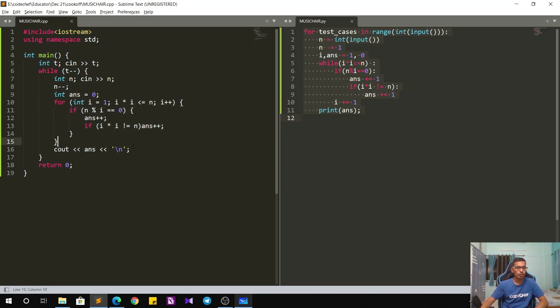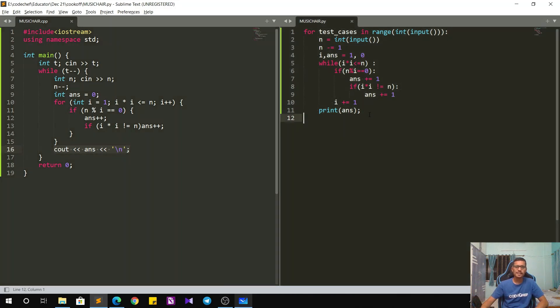So we do that, and in the end we just output the answer. Similar is the case in Python as well. We just take the input, decrement N by 1, run a while loop which is very similar to the for loop. We check the condition—if i is a divisor, if yes, I increment my answer by 1. And the other condition is that if i squared is not equal to N, then I again increment my answer by 1. And finally, I print my answer. So this completes the solution.